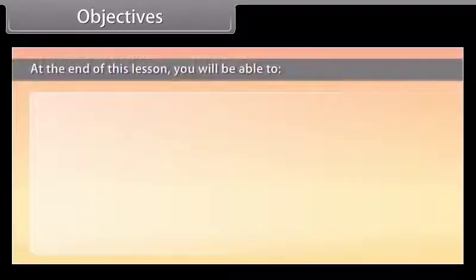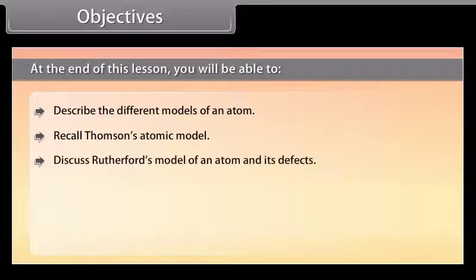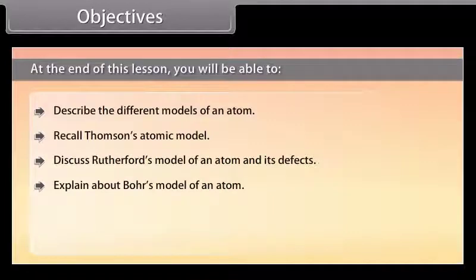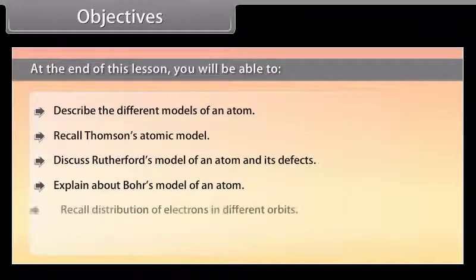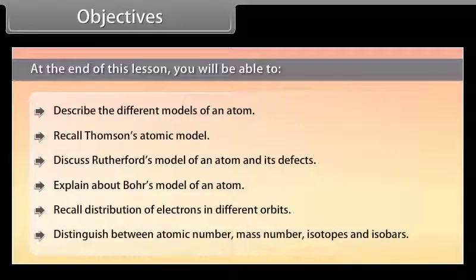At the end of this lesson, you will be able to: describe the different models of an atom; recall Thomson's atomic model; discuss Rutherford's model of an atom and its defects; explain about Bohr's model of an atom; recall distribution of electrons in different orbits; and distinguish between atomic number, mass number, isotopes and isobars.